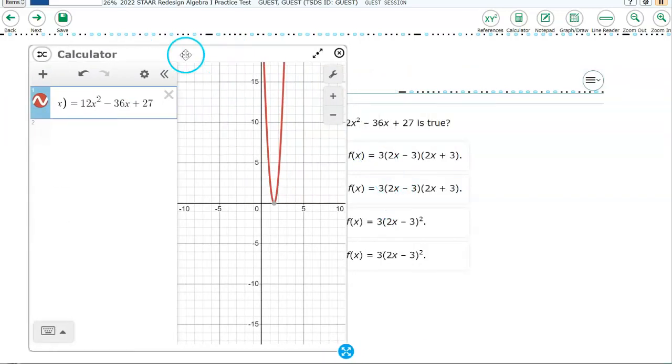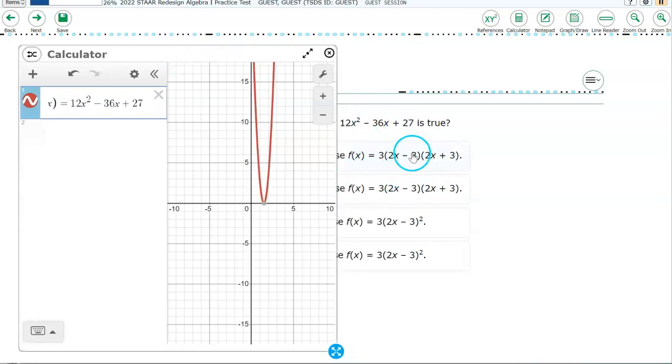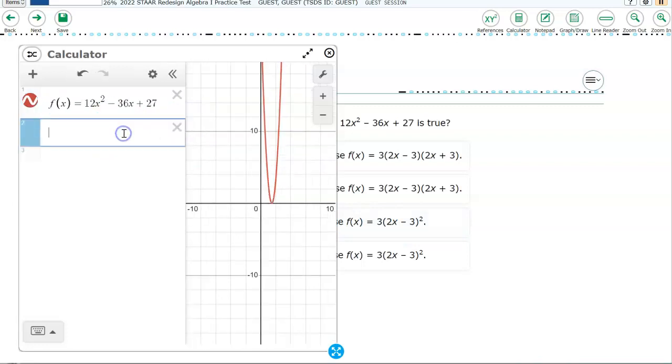And you have basically, I'll do the right side first because I can see it right now. But these are in your answer choices. Well, these do not all equal this. So what I'm going to do is I'm going to type in the first one. F of X equals 3 times 2X minus 3 times 2X plus 3. And is that equivalent to the red one that I typed in originally? And it's not.